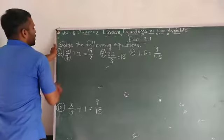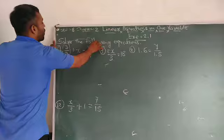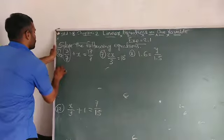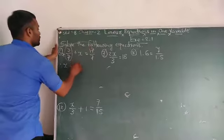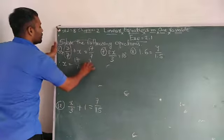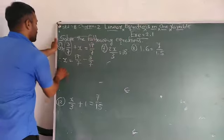this plus 3/7 is moved from left hand side to right hand side. Therefore, x = 17/7 - 3/7. Plus 3/7 is converted into minus. So now x equals, the base is the same, so it means 17 minus 3.